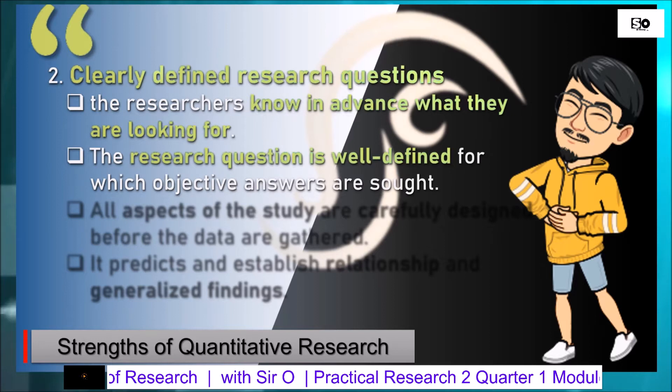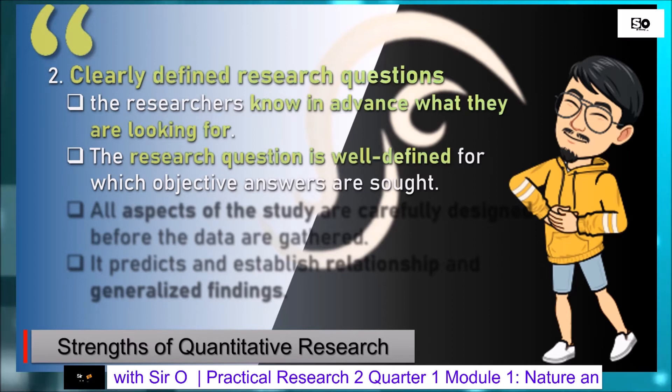Pangalawa, clearly defined research questions. The researchers know in advance what they are looking for. Mas madaling makagawa ng isang research kung tayo mismo bilang isang researcher o mananaliksik ay alam natin kung ano ang magiging kalalabasan ng ating hinahanap ng mga katanungan sa ating napiling paksa. The research question is well defined for which objective answers are sought. Ang gagamitin nating survey questionnaire ay dapat naka-align o naka-base sa kung ano ang mga tanong na ating kinakailangang bigyan ng kasagutan.